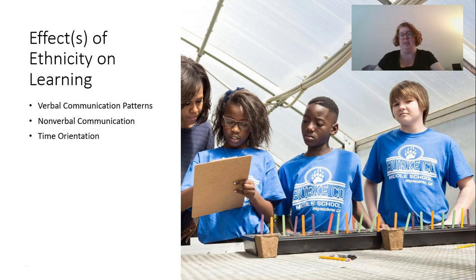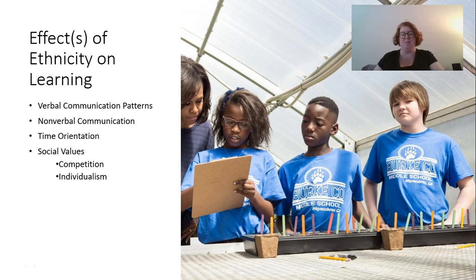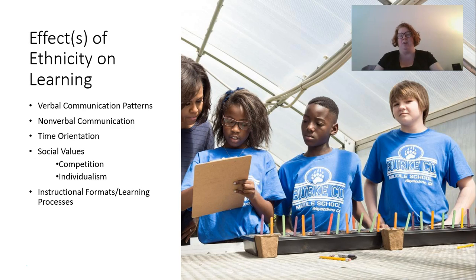Social values — things like our value on competition or individualism — differ across cultures. Instructional formats and learning processes also vary: a very didactic style with everyone sitting in individual chairs in high school, or conversely a group environment like you might see in elementary school, or hands-on learning, might be very different from the culture a student is coming from. When we think about these effects of ethnicity on learning and these generalizations, we want to consider both micro and macro cultures. A macro culture is something like the United States, or being white or black in the United States, or being German or Japanese.